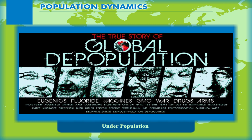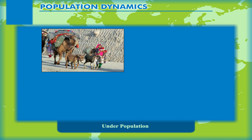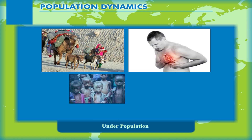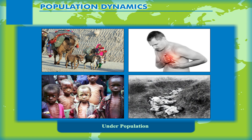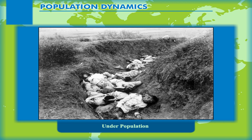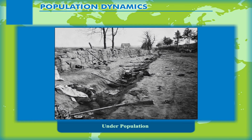Underpopulation, sometimes known as depopulation, is the reduction over time in a region's population. The decline can be caused by several factors including sub-replacement fertility along with limited immigration, heavy emigration, disease, famine and war. History is replete with many examples of large-scale depopulations, and many wars have been accompanied by significant population declines.